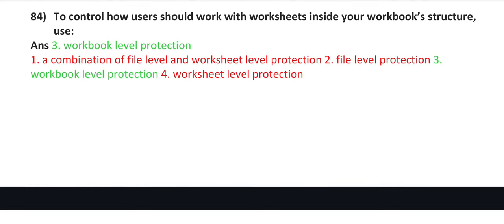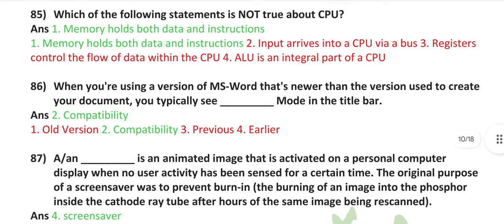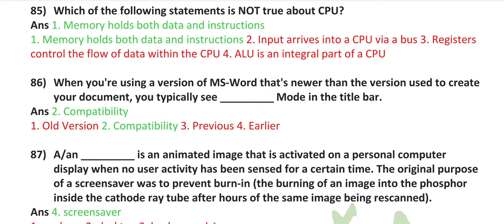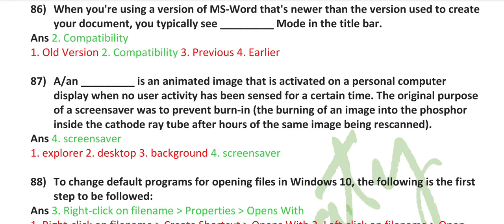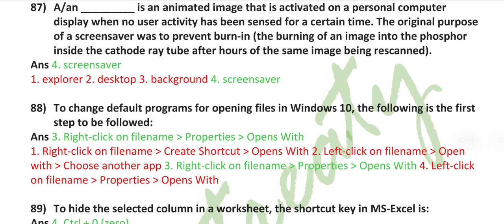To control how users should work with worksheets inside your workbook structure, use workbook level protection. Which of the following statements is not true about CPU? Memory holds both data and instructions. When you are using a version of MS Word that's newer than the version used to create your document, you typically see compatibility mode in the title bar. A screen saver is an animated image that is activated on a personal computer display when no user activity has been sensed for a certain time. The original purpose of a screen saver was to prevent burn-in, the burning of an image into the phosphor inside the cathode ray tube.